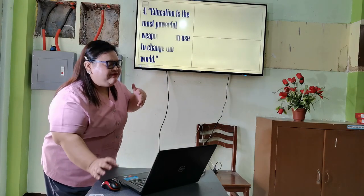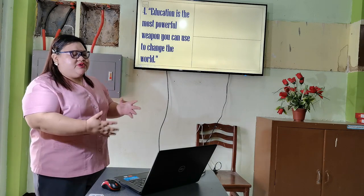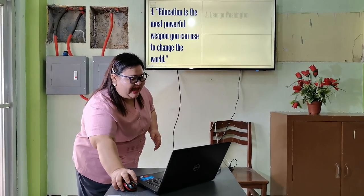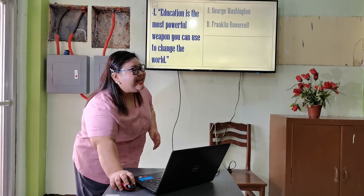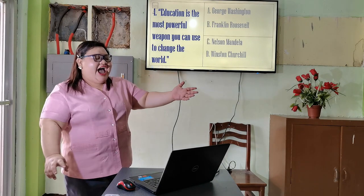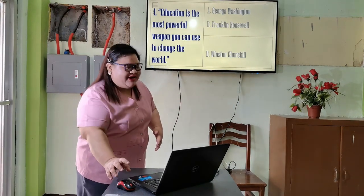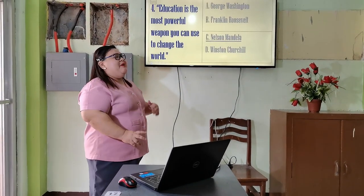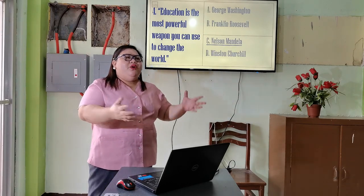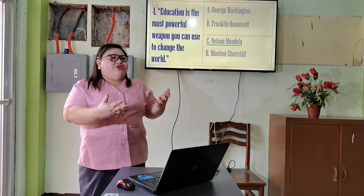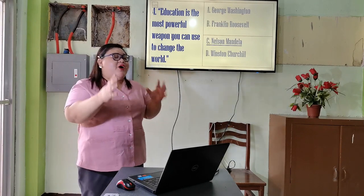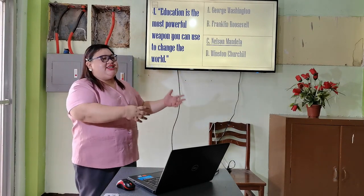Next line: 'Education is the most powerful weapon you can use to change the world.' Was it A: George Washington, B: Montesquieu, C: Nelson Mandela, or D: Winston Churchill? The correct answer is letter C — Nelson Mandela. Now, my question is: why did we begin our class with this activity? When we do a review of related literature and studies, it is important to know that we cannot do it without having to cite sources from other people.